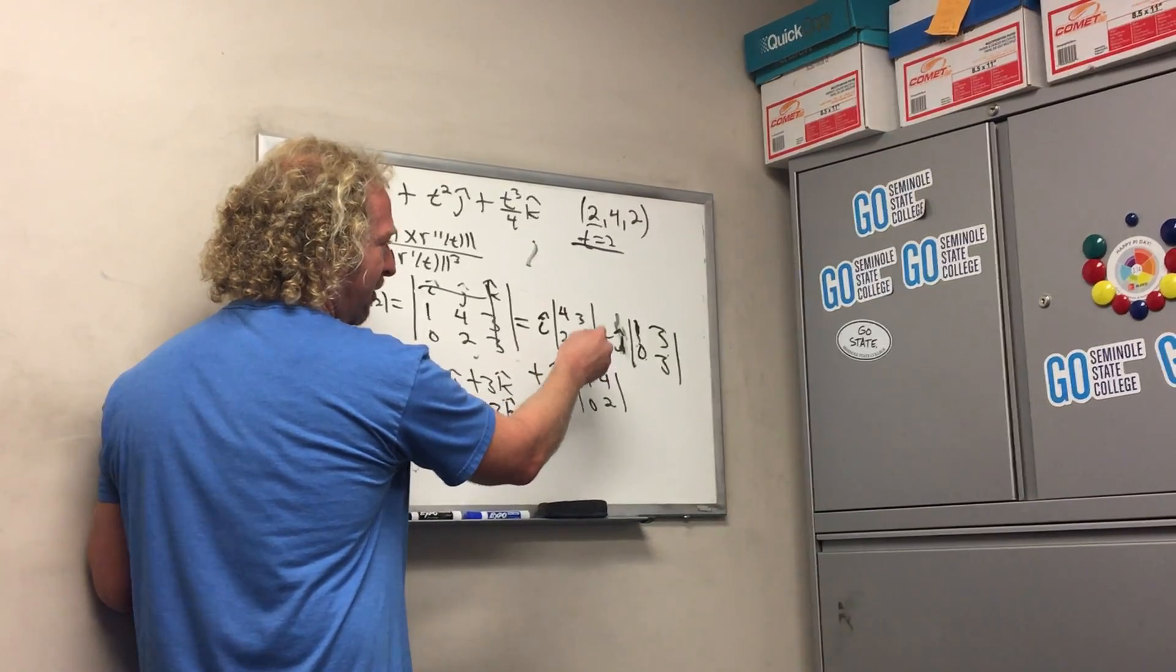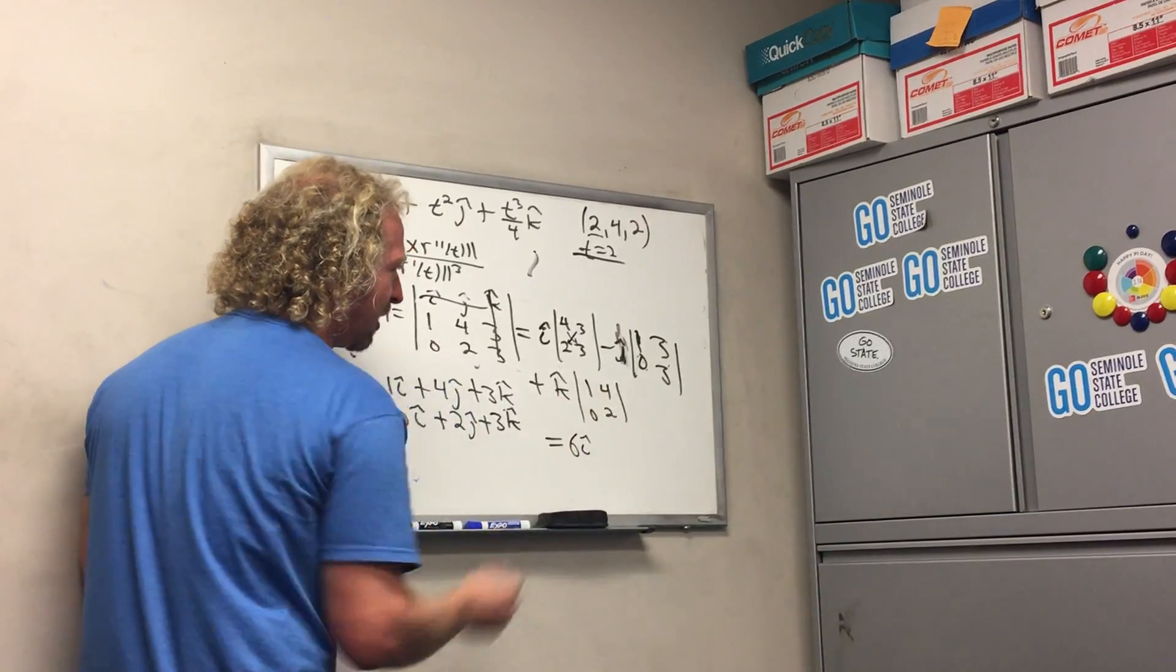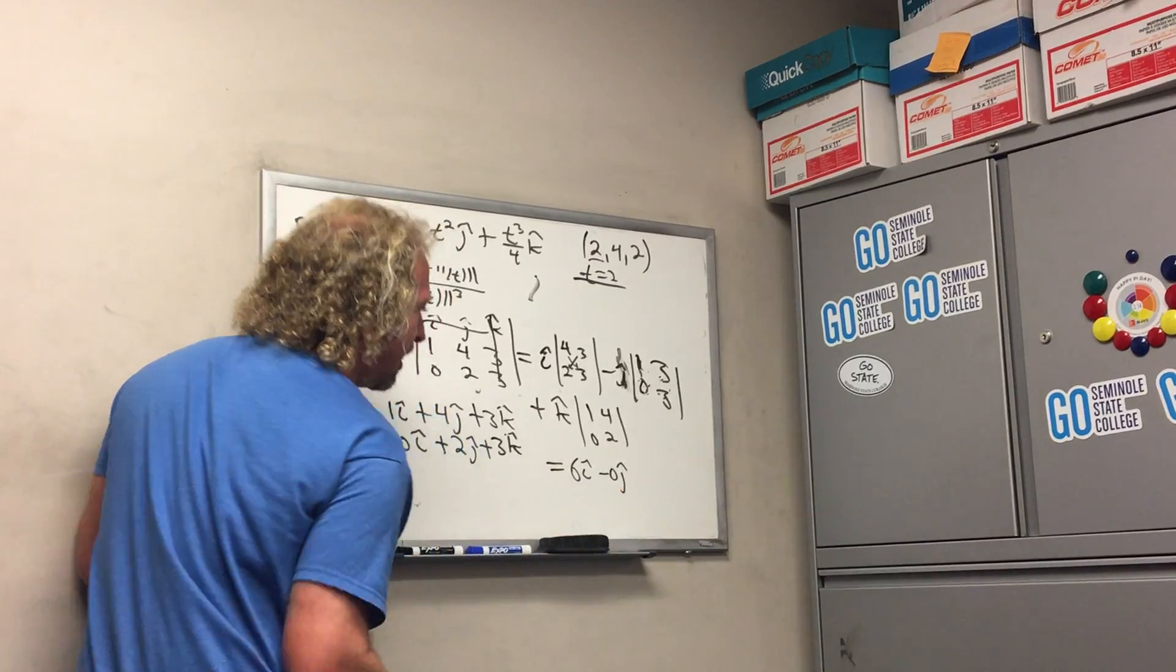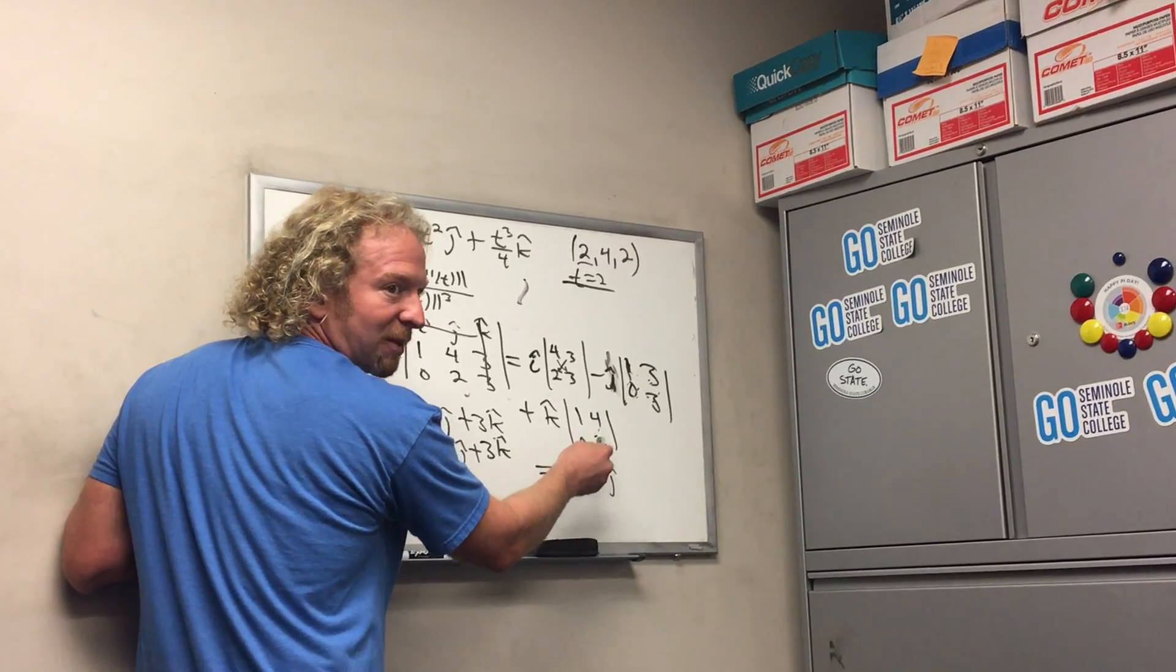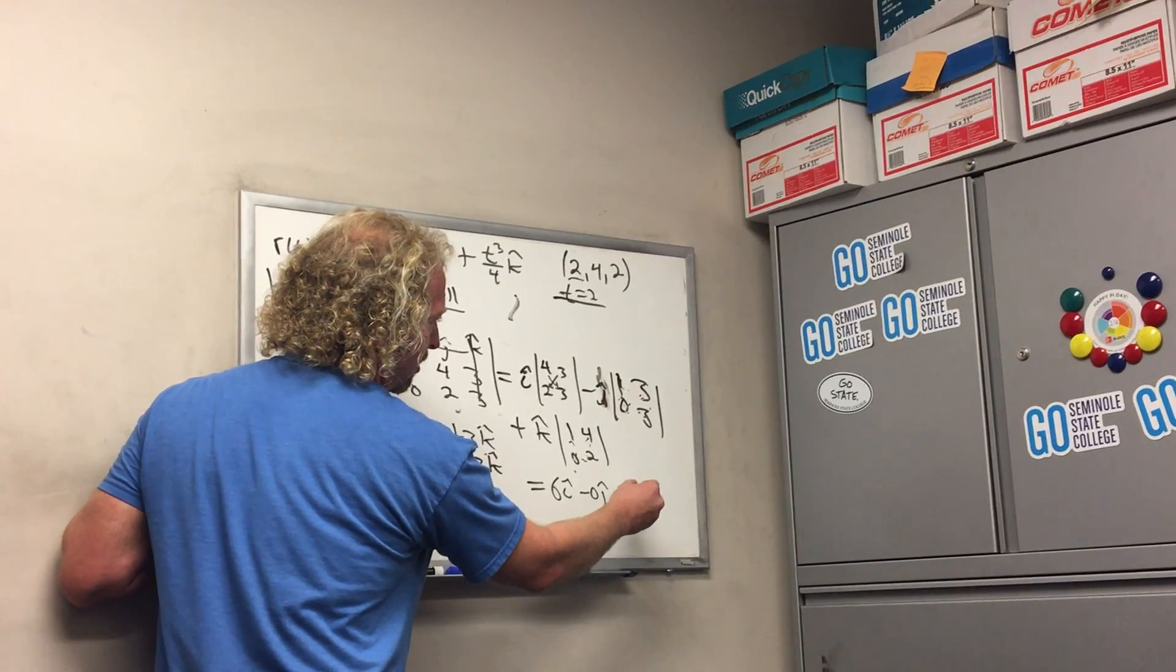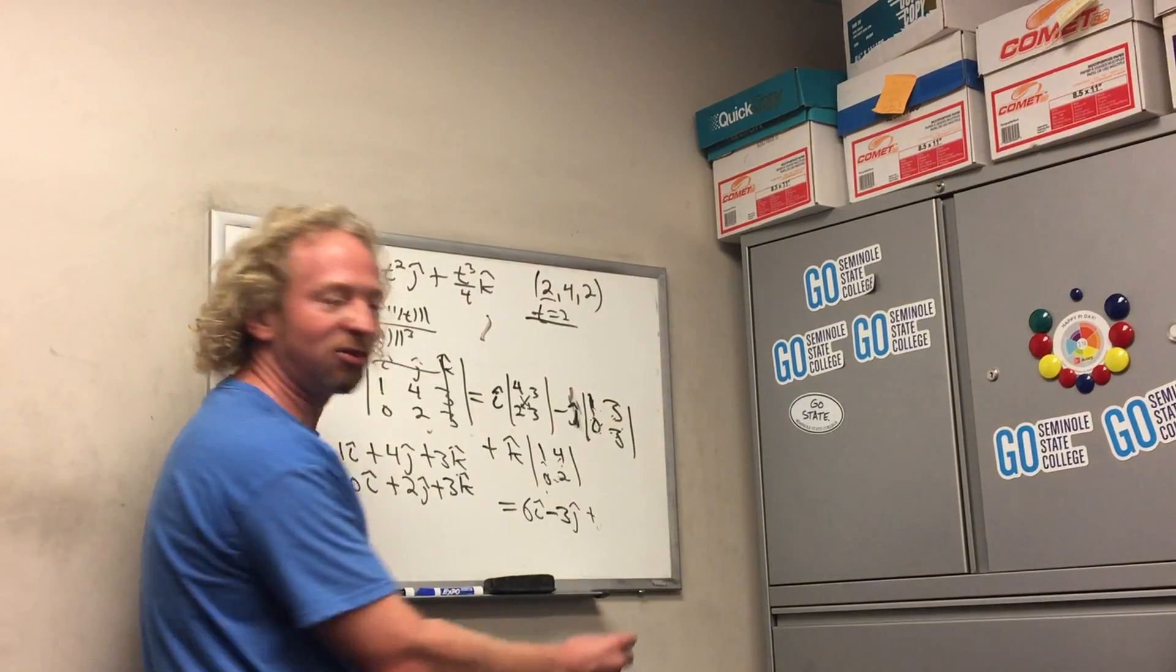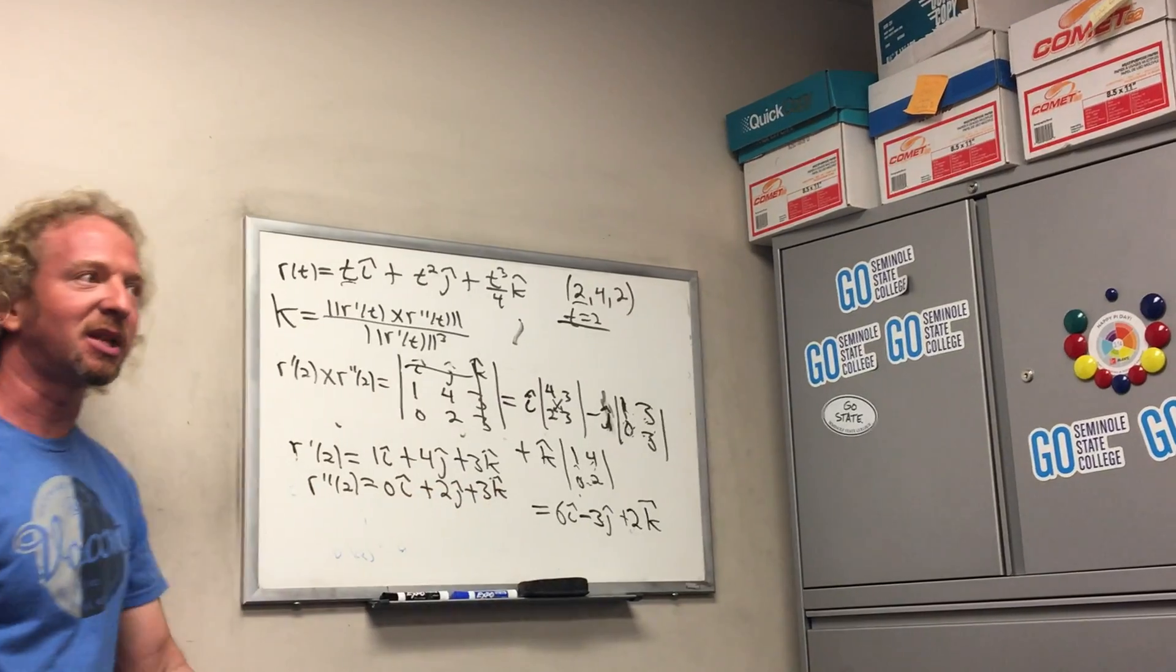So it would be 4 times 3 is 12, so it's 12 minus 6, so just 6 i hat. And then 1 times 3 is 3, 3 times 0 is 0, so 3 minus 0 j hat. And then it's going to be 2 minus 0, because 1 times 2 is 2 minus 4 times 0. So minus 3 j hat - it's a mistake. Good save. Falling apart. So minus 3 j hat. And then plus 2 k hat. So that's the cross product.